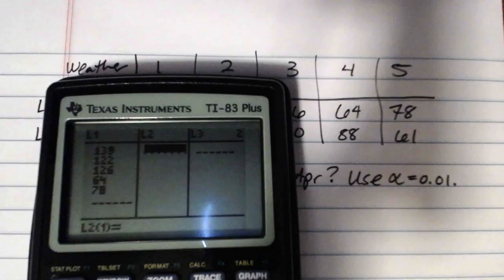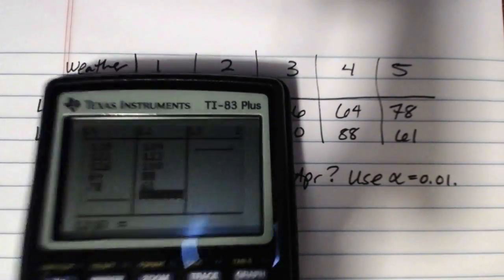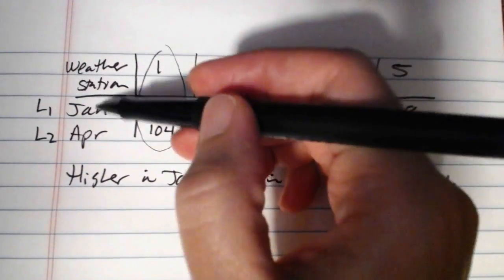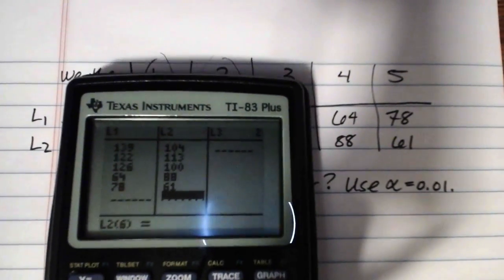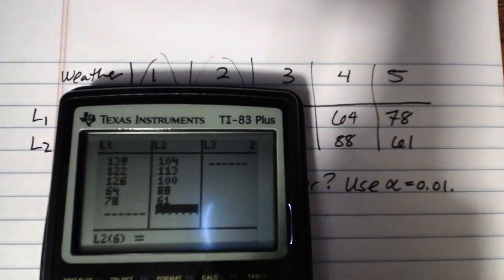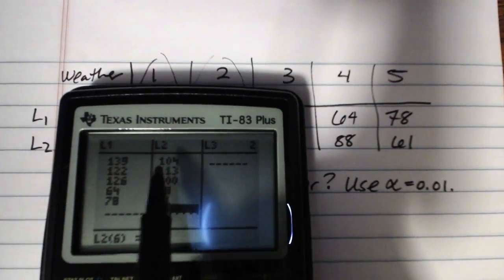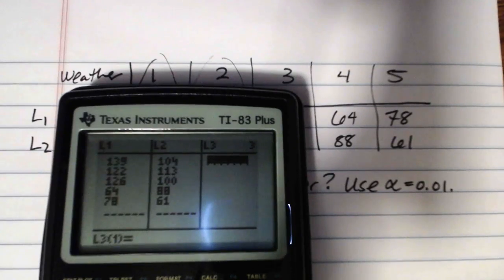And then, for the April data, we had 104, 113, 100, 88, and 61. Now, because these data are paired by weather station, here's weather station one, January, April. Weather station two, January, April. And so on and so forth. When you put them in your lists, you want those pairings to remain intact. So, both of these first observations belong to weather station number one, January, April. Weather station number two, January, April. And you want those matched pairs to be lined up next to one another.